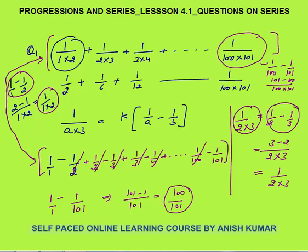This kind of question can be solved in under a minute. The key is being able to convert 1/(A×B) into K times (1/A − 1/B). In this series, K was 1.